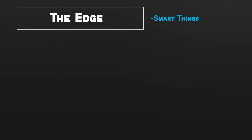Let's talk about the different types of edges. First, let's make sure we find the edge — and we found the edge. The edge is smart things, smart devices, smart cars. It is anything that is generating this data, whether it's your smartphone or your smart car. This is the edge.